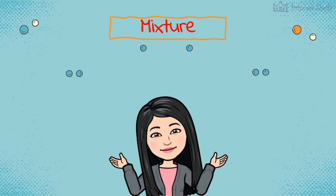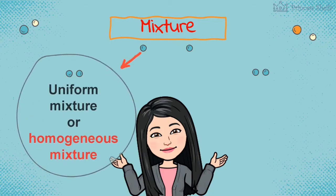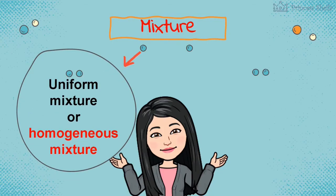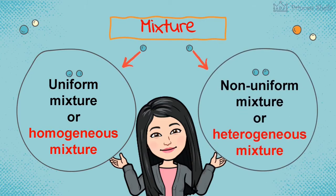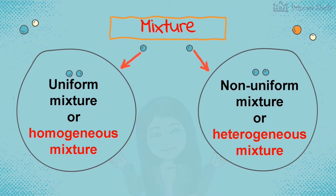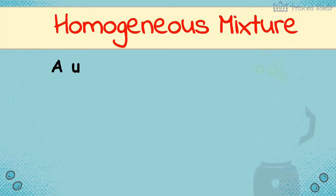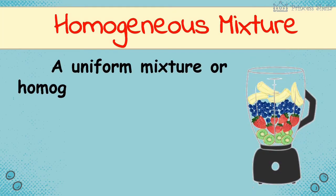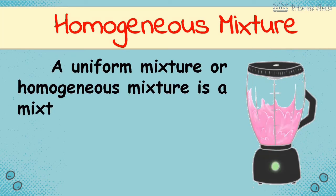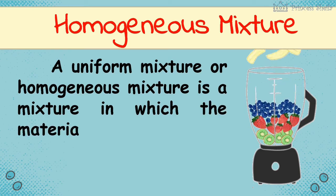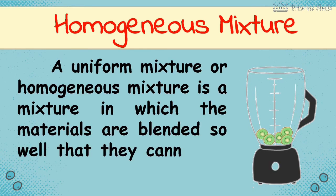Mixture is classified into two groups, the uniform mixture or homogeneous mixture, and the non-uniform mixture or heterogeneous mixture. A uniform mixture or homogeneous mixture is a mixture in which the materials are blended so well that they cannot be separated manually.